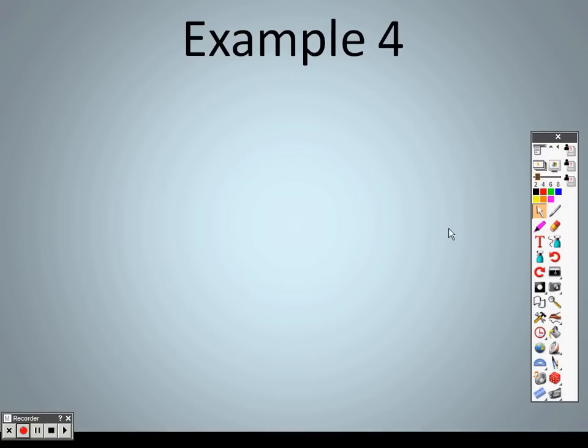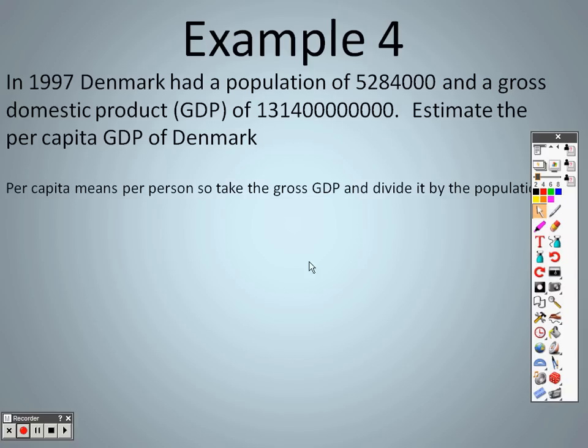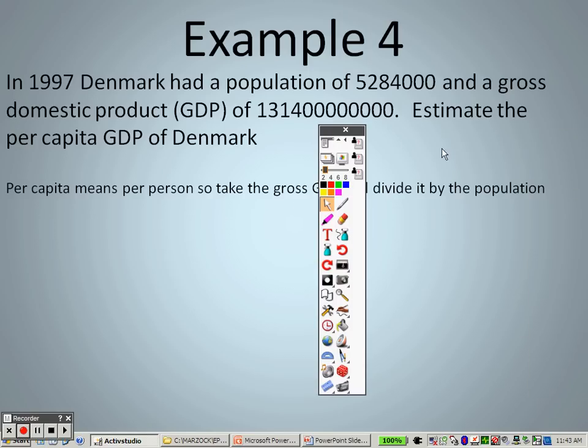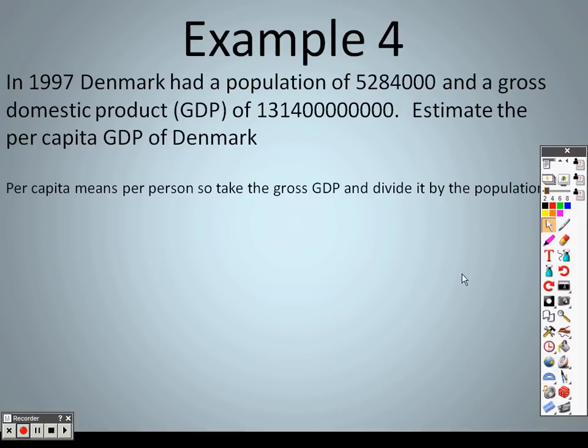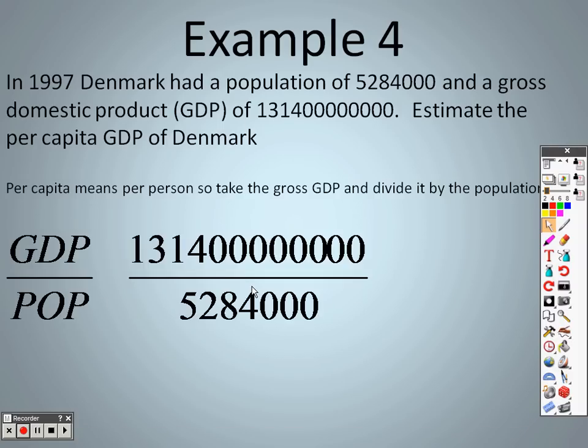So taking a look here at example four, in 1997, Denmark had a population of 5,284,000 and a gross domestic product of a really large number that I don't feel like counting. Estimate the per capita GDP of Denmark. So per capita means per person. Take the gross GDP and divide it by the population. GDP over the population.